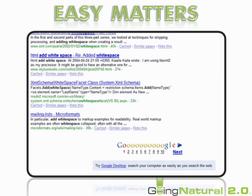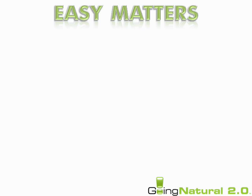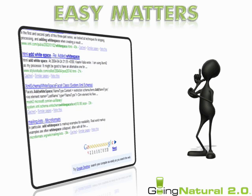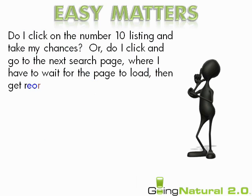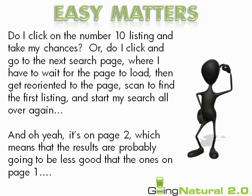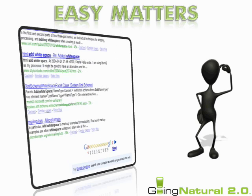There are two factors at work. Number one: the final position on a SERP page at Google or elsewhere is easier to read because it has white space surrounding it. Remember we said easy matters? There you go. Number two: the user is evaluating something we call in cognitive psychology a cost function — and by the way, we're getting into black belt level ClickFu here. The user has arrived at the last search result on the page. All the other results have largely scrolled off the top and they have a decision to make. Do I click on the number 10 listing and take my chances? Or do I click and go to the next search page, wait for the page to load, reorient to the page, scan to find the first listing and start my search all over again? And it's page two, so the results are probably going to be less good than the ones on page one. They're measuring the cost associated with all of these things — the time, the effort, and the energy. They click on position 10 more than next. Easy matters, folks.